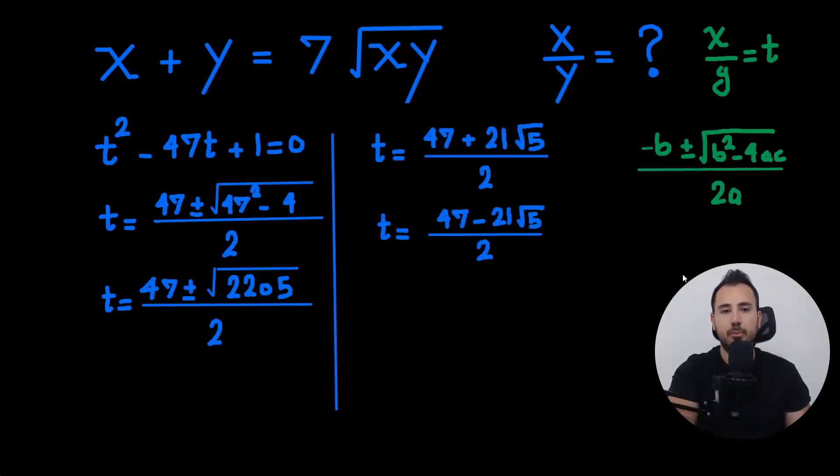And here we have to check something. Because, let's see here, x over y, xy is supposed to be larger than 0.